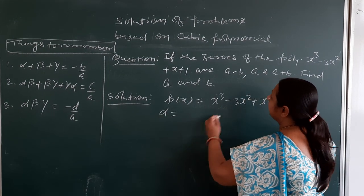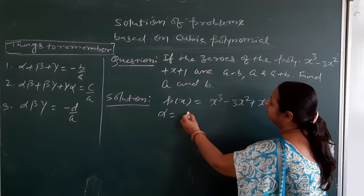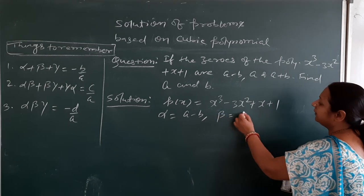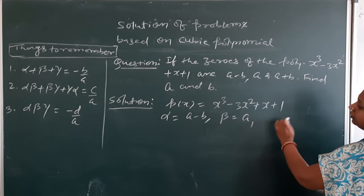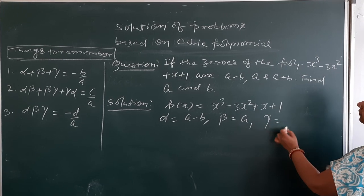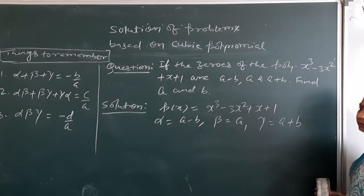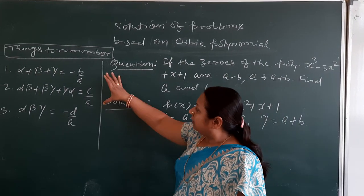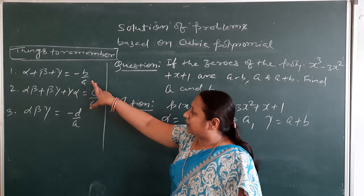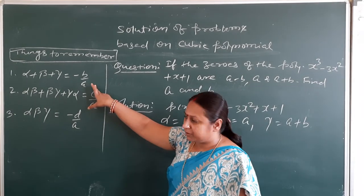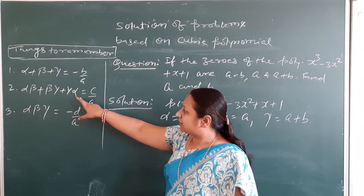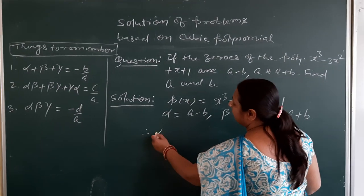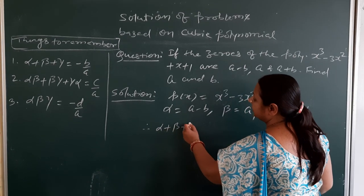So the zeros are: alpha = a minus b, beta = a, and gamma = a plus b. To find a and b, we have three options: we may use alpha plus beta plus gamma, the sum of products taken two at a time, or alpha·beta·gamma.